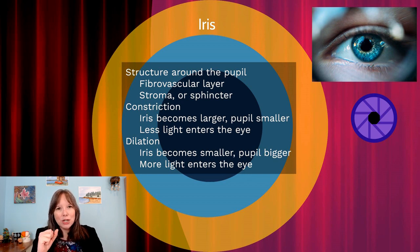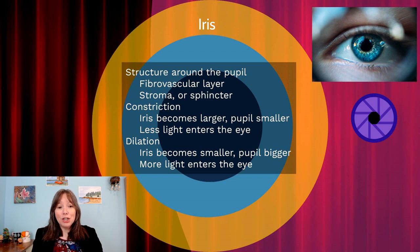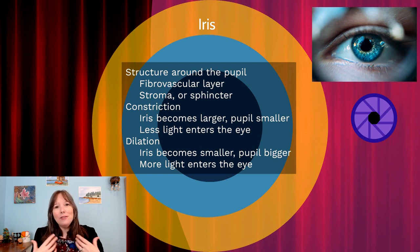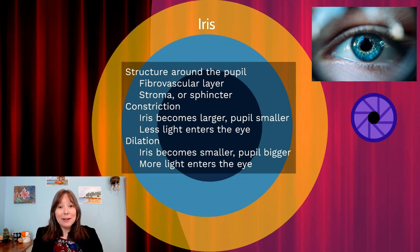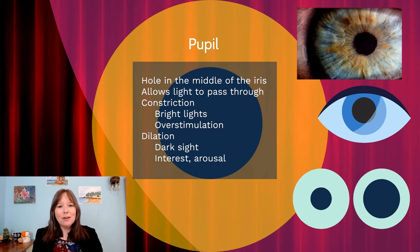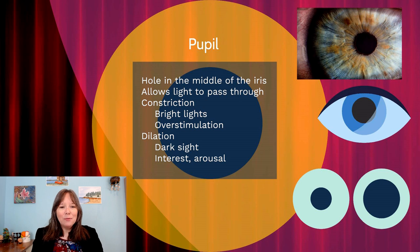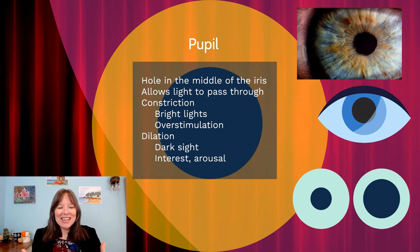Constriction is when the iris becomes larger and the pupil becomes smaller, allowing less light to enter the eye. When the pupil becomes smaller, it's very adaptive in bright light situations — your brain has enough information and only needs a little light. So when you're overstimulated, it's normal to see the iris constrict because you don't want much more information coming in.